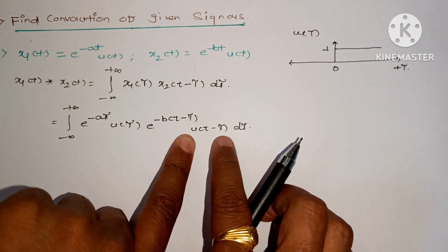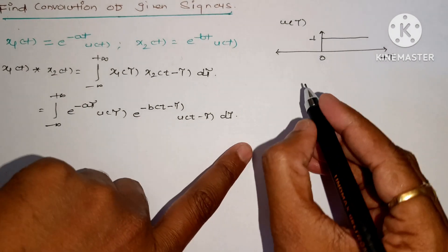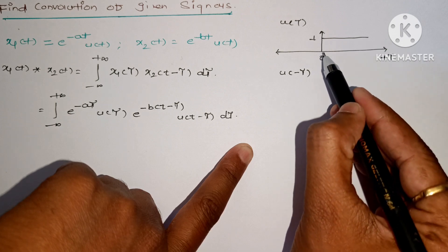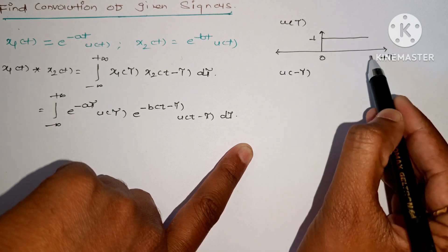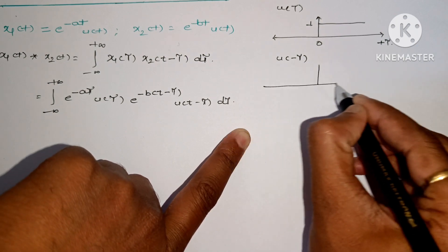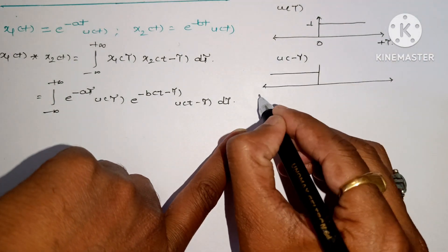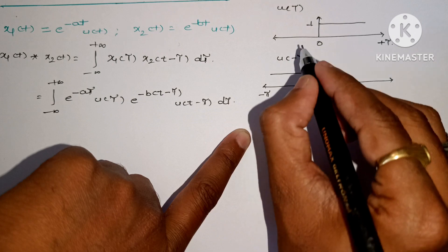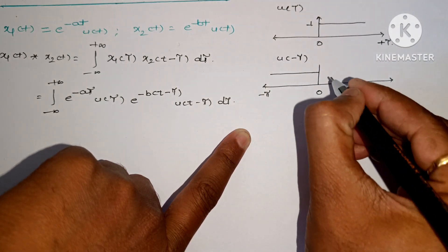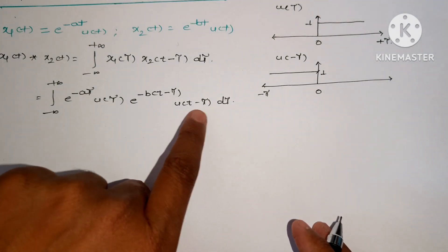We will now look at u(τ). For u(t minus τ), we use the folding operation: we can draw u(τ), then fold it — replacing τ with minus τ. The axis flips at zero, so negative values become positive and the amplitude is 0 for τ greater than 0. This gives us u(minus τ).